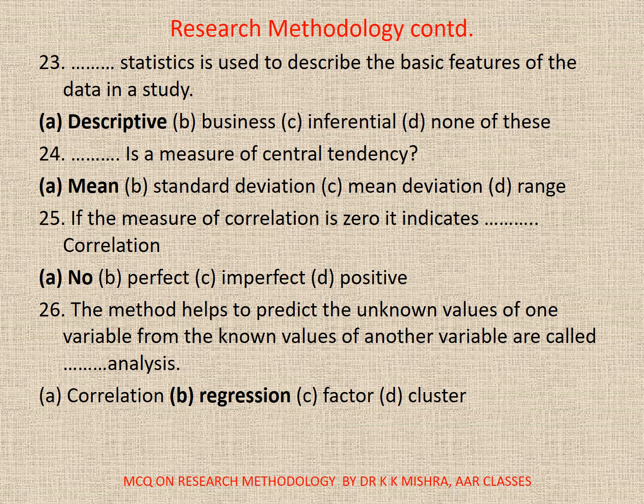Question 26: The method that helps to predict the unknown values of one variable from the known values of another variable is called dash analysis. A. Correlation. B. Regression. C. Factor. D. Cluster. Correct option is B. Regression.